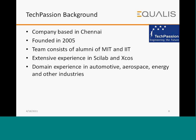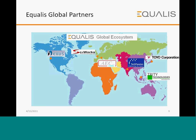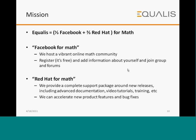Equalus is on a mission of providing a combination of Facebook and Red Hat formats. Facebook for math — imagine a place where you could go and talk to other math users, post questions, get answers, share information about interesting research or upcoming seminars. That is what Equalus.com provides. On the other hand, just as Red Hat does for Linux, where enterprise customers are focused on solving their problems rather than their Linux problems, Equalus does the same for open source math packages.